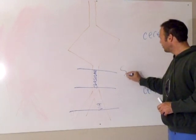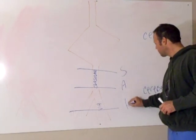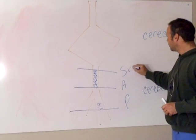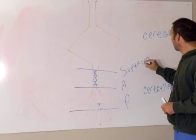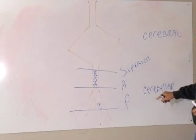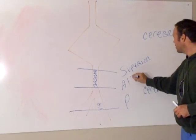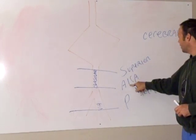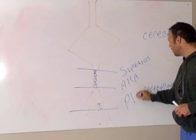The way I remember these is SAP. S is for superior cerebellar artery. This one is your AICA, anterior inferior cerebellar artery, and then your PICA.